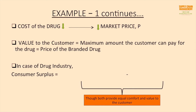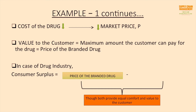Since these generic companies have reduced the cost of the drug, the market price P is also reduced. But the value to the customer — the maximum amount a customer could pay for that drug — remains the same as the price of the branded drug, because that was the amount customers were previously paying. Hence, the consumer surplus is the difference between the branded drug price and the market price of the generic drug.